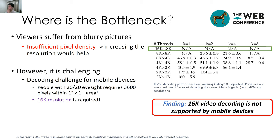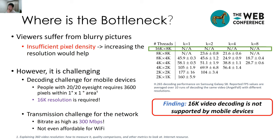The first finding is that 16K video decoding is not supported by mobile devices, and this holds true for all the devices we have tested. Second, the transmission is also challenging for the networking part, and 16K video requires a bit rate as high as 300 Mbps — not even affordable for Wi-Fi.